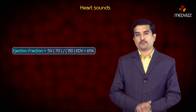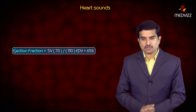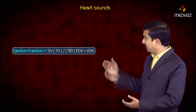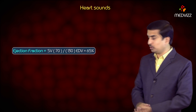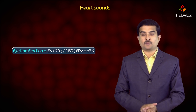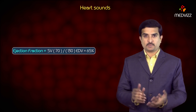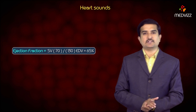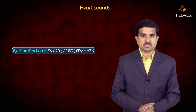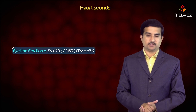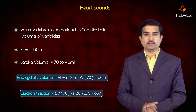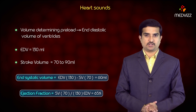The ejection fraction can be calculated as stroke volume divided by end-diastolic volume: 70 ml divided by 130 ml, which equals approximately 65%. The normal ejection fraction is generally greater than 55%, but in normal individuals we call it 65%. These are the important high-yield points you need to know in cardiovascular physiology.